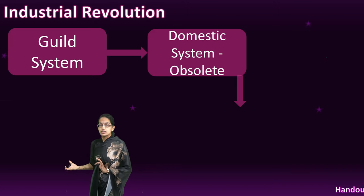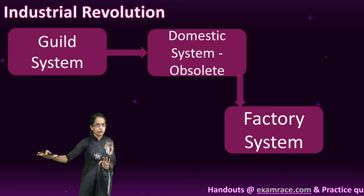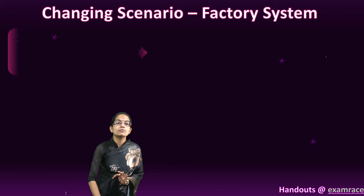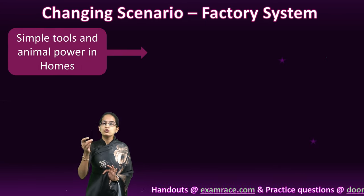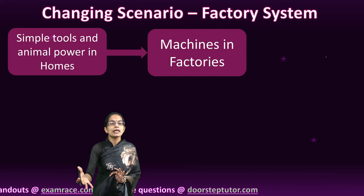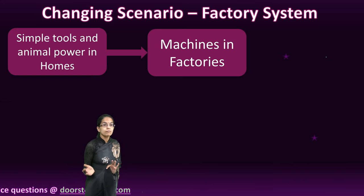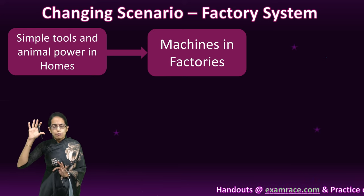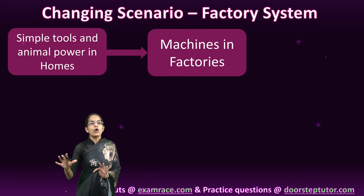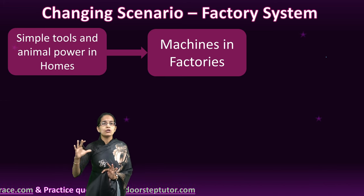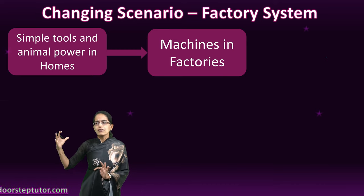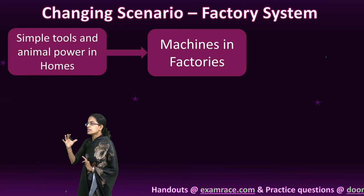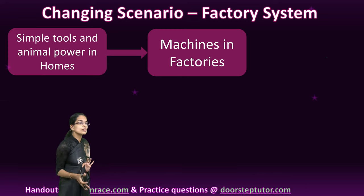The domestic system was replaced by the factory system. The factory system was managed by the capitalists — simple machines, simple tools, animal power, and human power used in homes were replaced by machines. Huge factories came into existence. For those factory floors, manual labor was required, but that labor was kept in worse conditions, with poor sanitation, poor infrastructure, and poor healthcare facilities. The early forms of a capitalist society were seen through the Industrial Revolution.